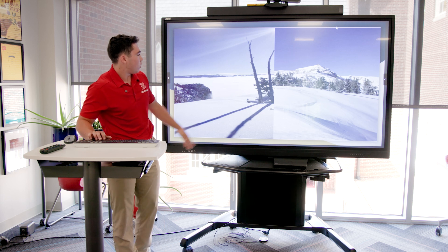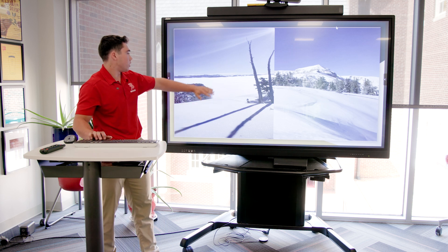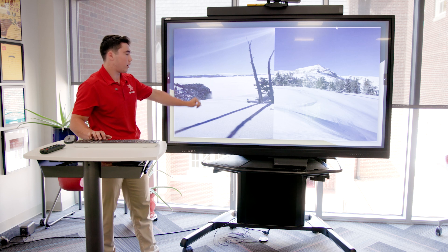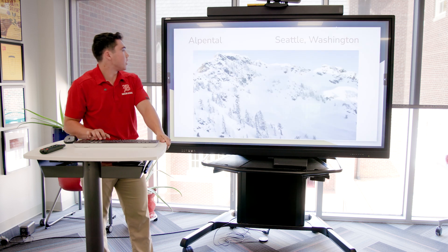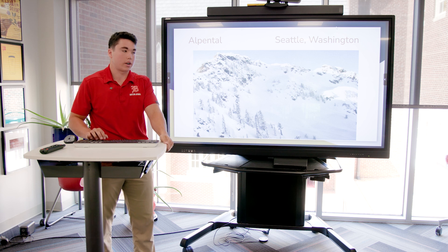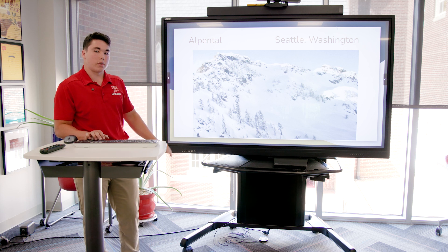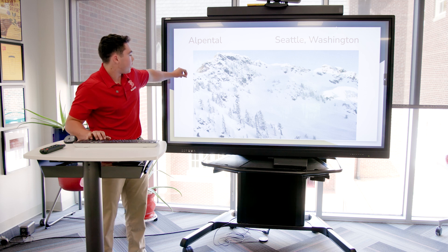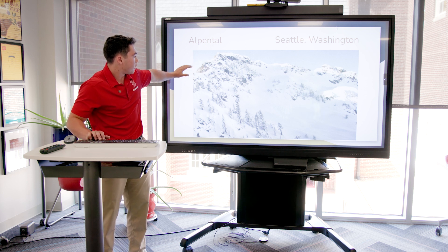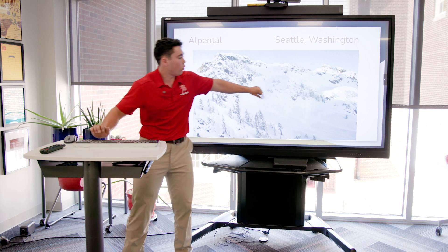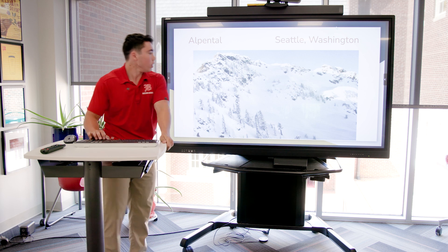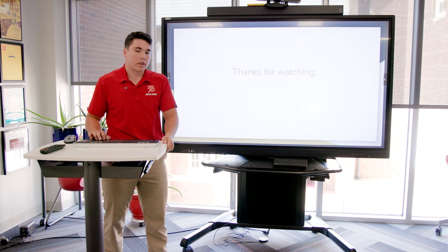This is also Jackson Hole. I really like this image because you can see the clouds covering the town and the snow is just perfect. This is Alpenthal in Washington — it's a really small resort with only two chairlifts, so it's mainly focused on the backcountry. When I went there, we hiked out through this whole bowl and skied behind a cliff. And yeah, that's my TED talk — thanks for watching.